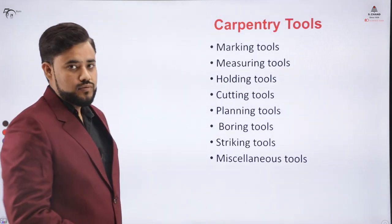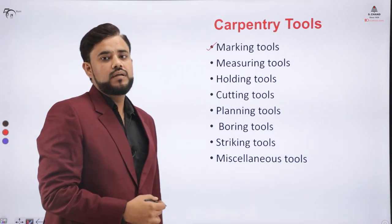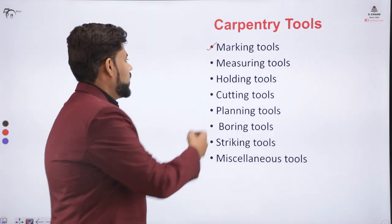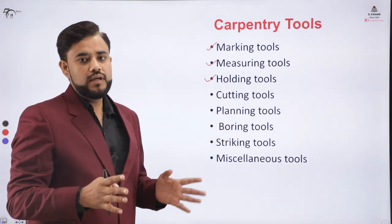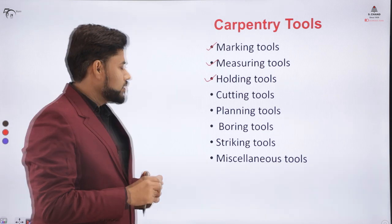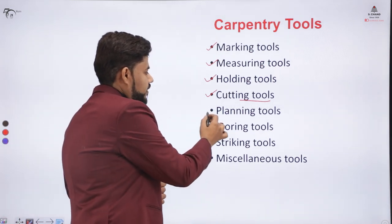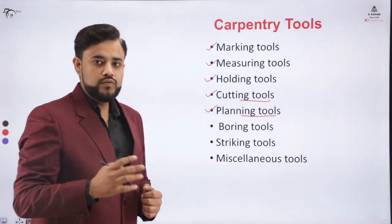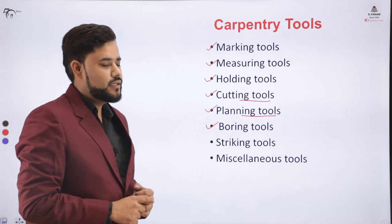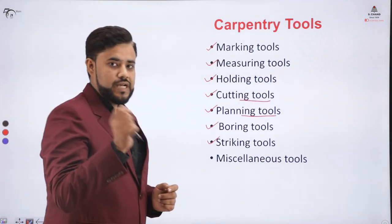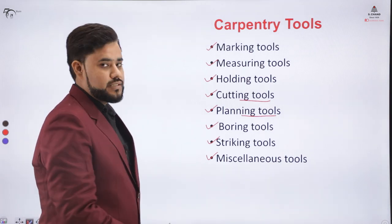Let us come to the tools and the categories of the tools. We have these many categories of carpentry tools. The first is the marking tool, used to mark the measurements on the surface of the wood. Second is the measuring tool, used to measure the length on the surface of the wood. Third is the holding tool, used to hold the wood between the jaws. Then we have the cutting tool, used to cut the wood. Then the planing tool, a finishing tool used to remove extra material from the surface. Then we have a boring tool, used to enlarge an existing hole in the wood. Then we have the striking tool and additionally some miscellaneous tools. Let us understand these tools one by one.